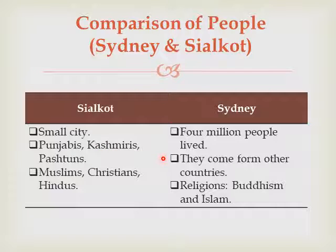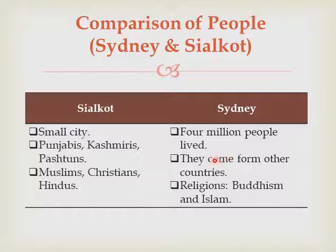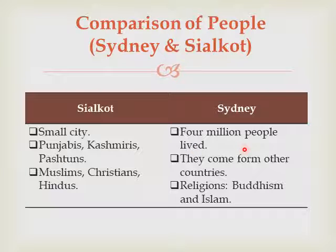Most of the people in Sialkot are Muslims, though Christians and Hindus are also present. On the other hand, Sydney is a city of 4 million people, mostly inhabited by people who have come from other countries.